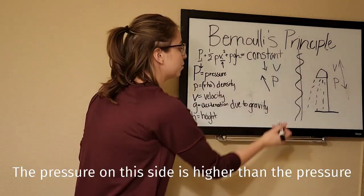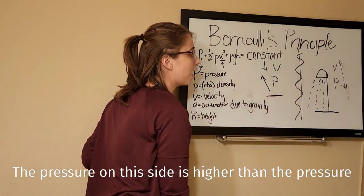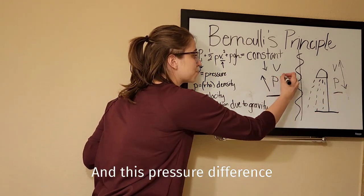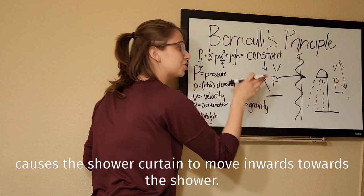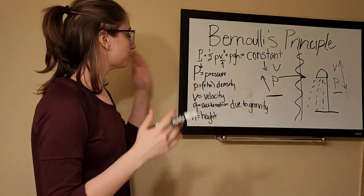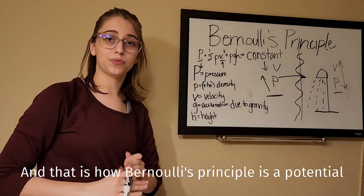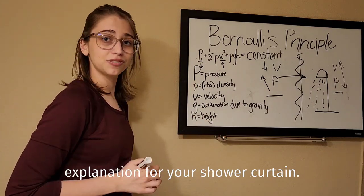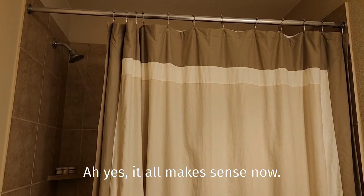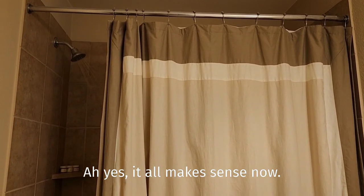The pressure on this side is higher than the pressure on this side, and this pressure difference causes the shower curtain to move inwards towards the shower. And that is how Bernoulli's principle is a potential explanation for your shower curtain. Thank you. Ah yes, it all makes sense now.